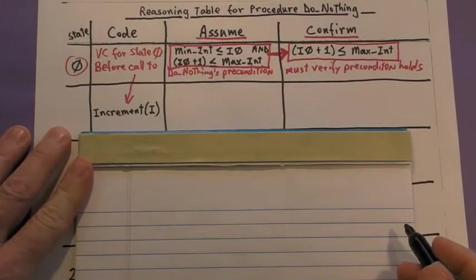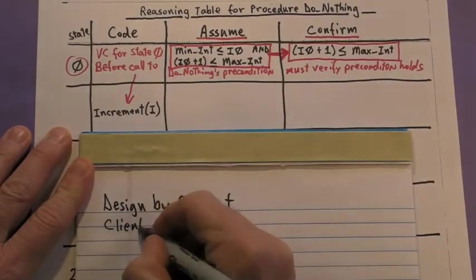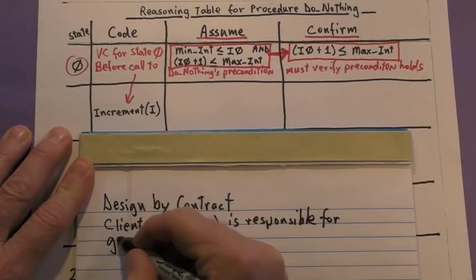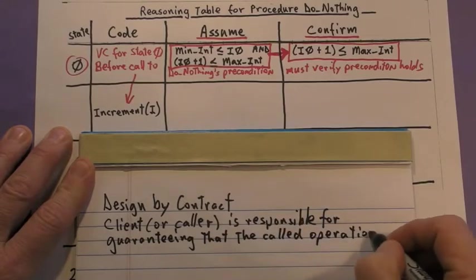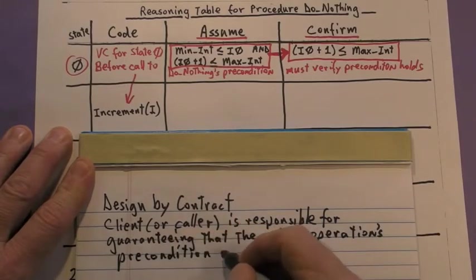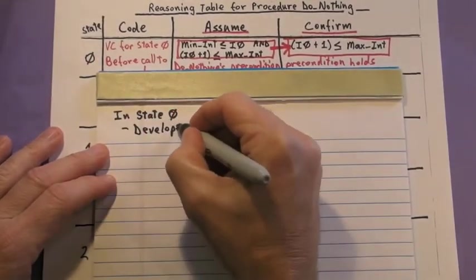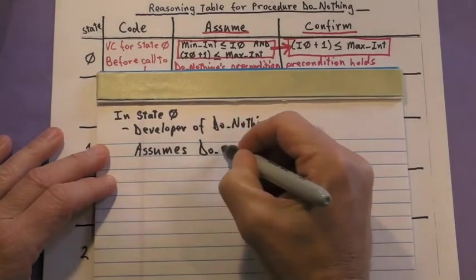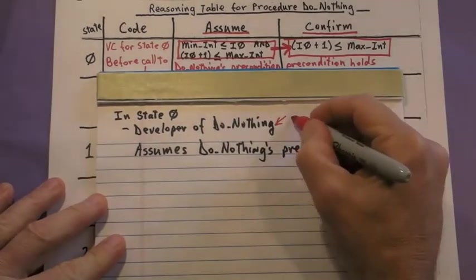At this point, we need to make it clear that the do nothing operation was designed using design by contract, which requires that the client or calling operation is responsible for guaranteeing that the called operation's precondition holds. Design by contract gives the developer leverage when reasoning about software. In state 0, she knows that the caller had to guarantee do nothing's precondition, and this is why she gets to assume that it holds.